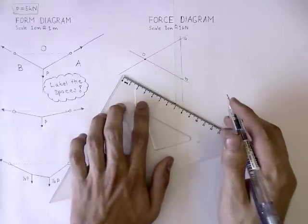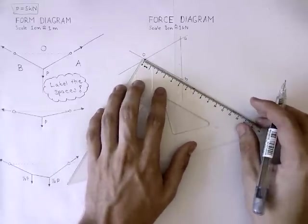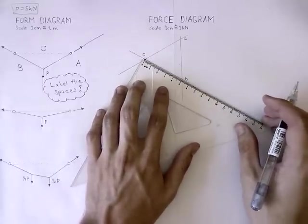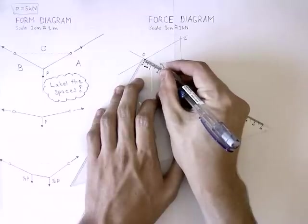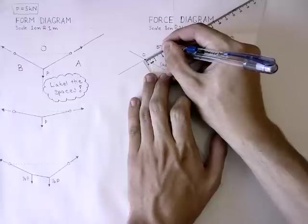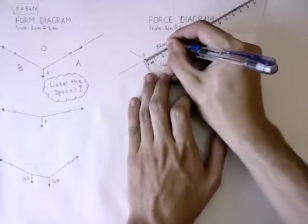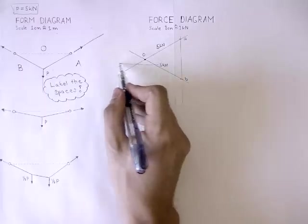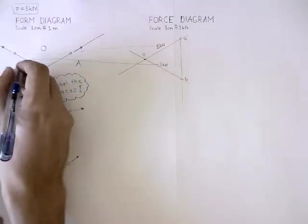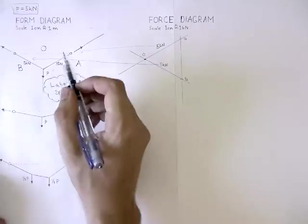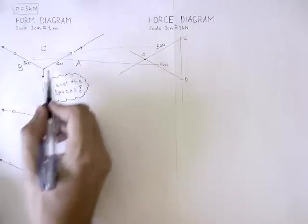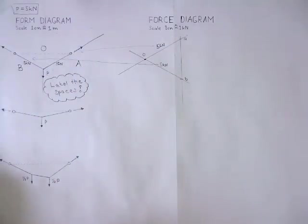In order to find the forces in your system, you have to measure the lines in your force diagram. By transferring the numbers back into the form diagram, we can mark the forces in the system. Now we know that these two elements have a tension force of 5 kN. If we were to dimension them, we would have to plug this value into the formula.